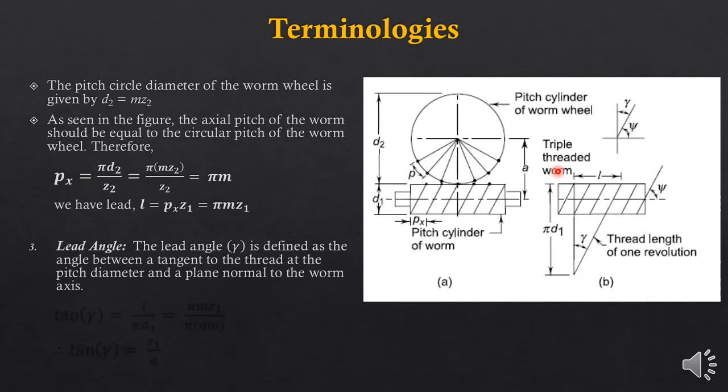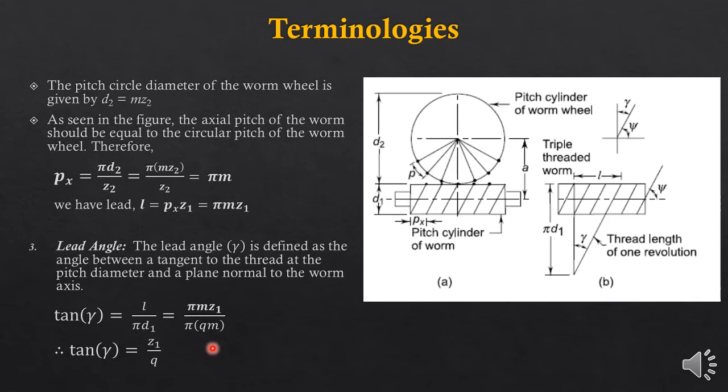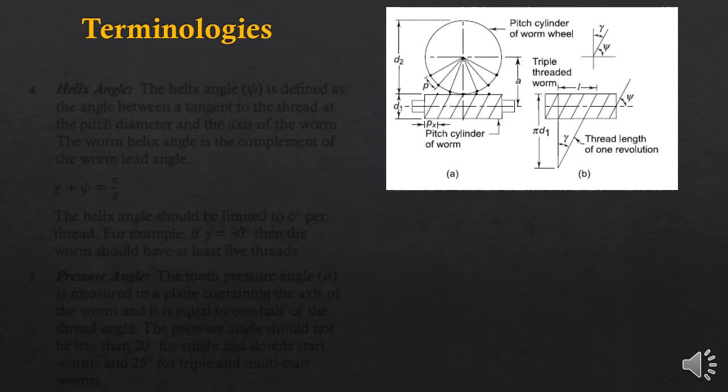Lead angle is the angle between the tangent to the thread at the pitch diameter and the normal plane. The value of the lead angle is obtained as: tan(lead angle) = lead divided by circumference = L / (pi·d1). This can be simplified and obtained in terms of z1/q.